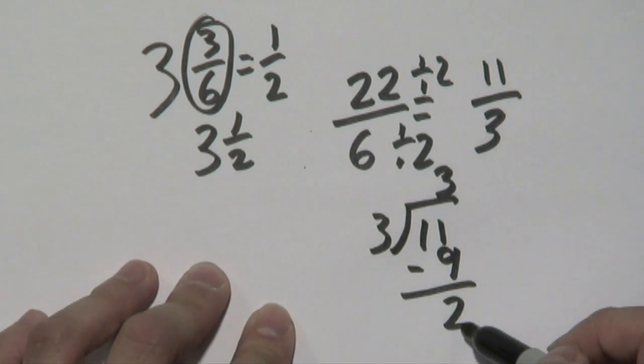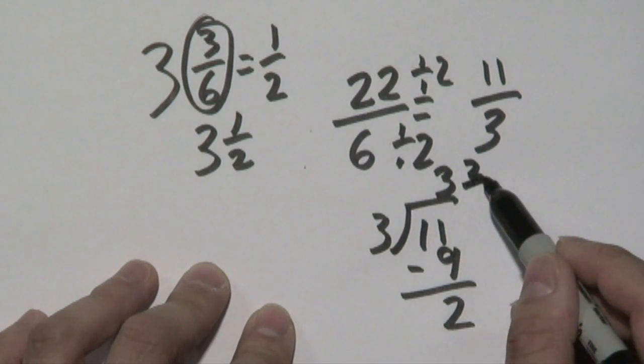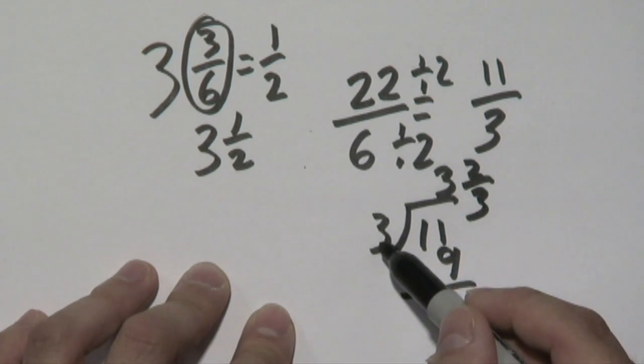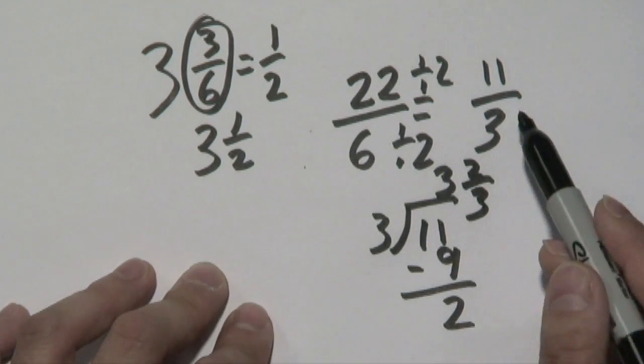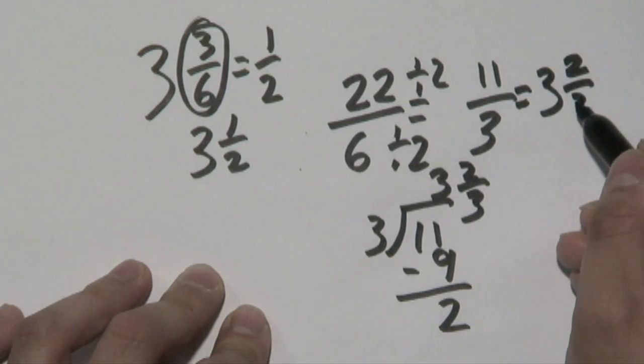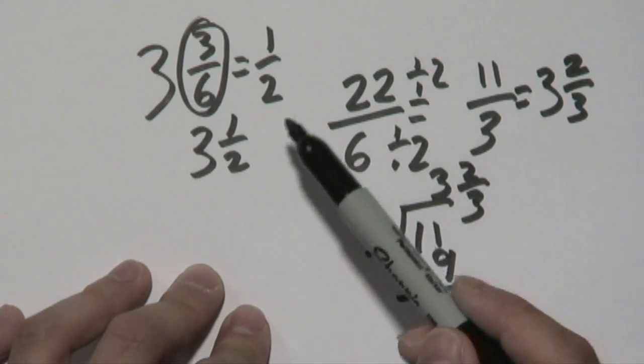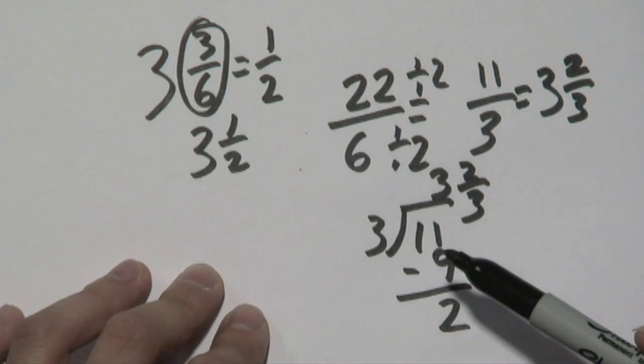You can do it a couple of ways, but the most convenient way is take the two as the remainder and then write it over the number that you see there. So that means eleven-thirds can be written as three and two-thirds. Either way, depending on the form, if it's an improper fraction or a mixed number, you can definitely reduce it to lowest terms.